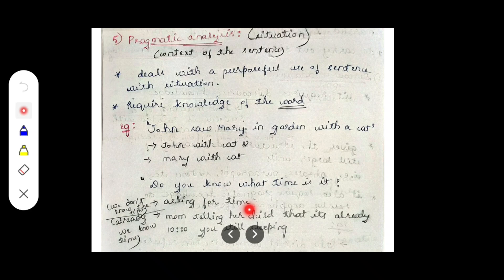The second situation is something you encounter in daily life — your mom waking you up saying 'wake up, it's already 10 and you're still sleeping.' Here, mom already knows the time is 10 a.m. or 11 a.m. and is using the question to tell you it's time to get up. So the first situation is asking without knowing the time, and the second is knowing the time and urging action.